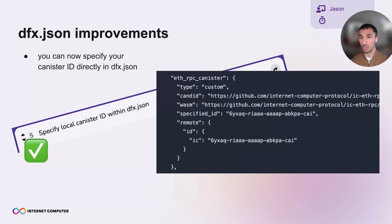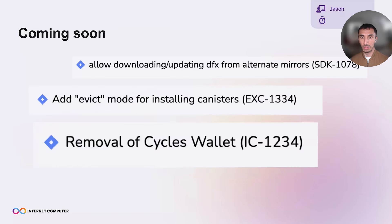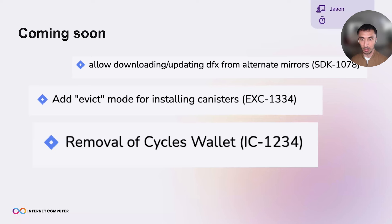You can now bind your canister IDs directly in dfx.json, addressing a long-sought community need. Looking at what's coming next: the ability to download DFX from a mirror for our Chinese developers who may have trouble accessing GitHub; a new install mode that will allow developers to skip the pre-upgrade hook during the upgrade process; and the cycles ledger, which will improve the way you send and receive cycles, deploy canisters, and more — with a sneak peek later today.